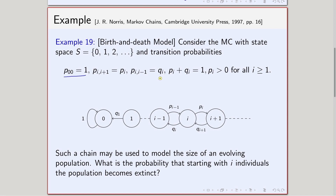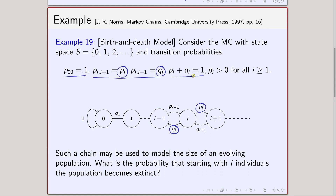For general i (except 0), with probability p_i we move towards right — from i to i+1 with probability p_i — and from i to i-1 with probability q_i. Naturally, we assume p_i + q_i = 1, because from i we can only go to i+1 or i-1. Along with that, we consider p_i strictly greater than 0 and strictly less than 1, which means both p_i and q_i lie between 0 and 1.